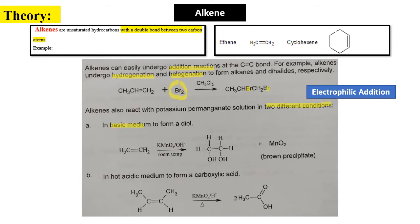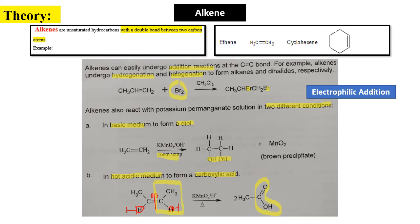Alkenes also react with potassium permanganate (KMnO4) solution under two different conditions. The first condition is basic medium at room temperature, which forms a diol. The second condition is hot acidic medium, which forms carboxylic acid (COOH). When the carbon-carbon double bond breaks, each carbon becomes C=O, and with hydrogen oxidation, OH is formed, giving two carboxylic acid groups.